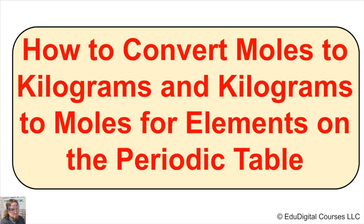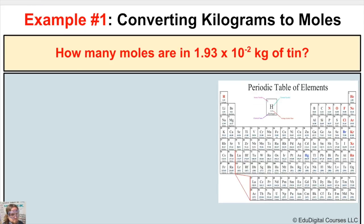In this first example it says: how many moles are in 1.93 times 10 to the negative second kilograms of tin? So we're talking about tin in this problem, and if we take a look at tin on the periodic table we can see that it is right here — number 50.